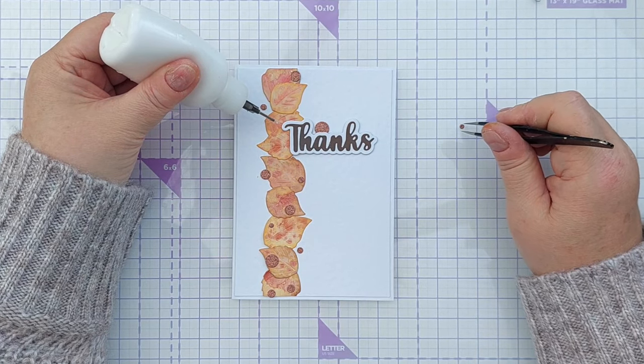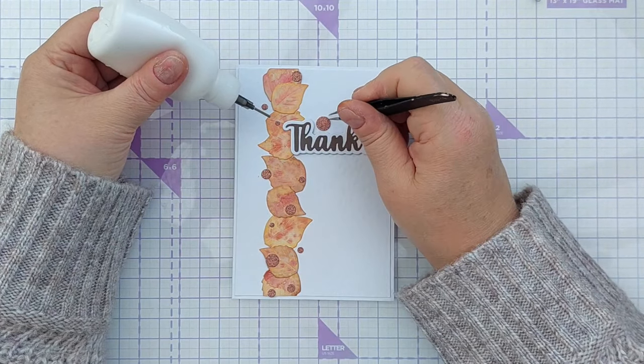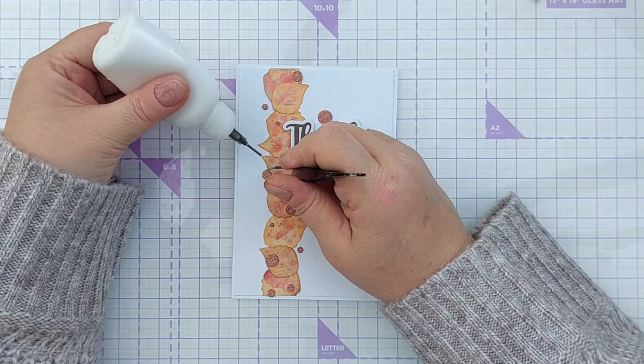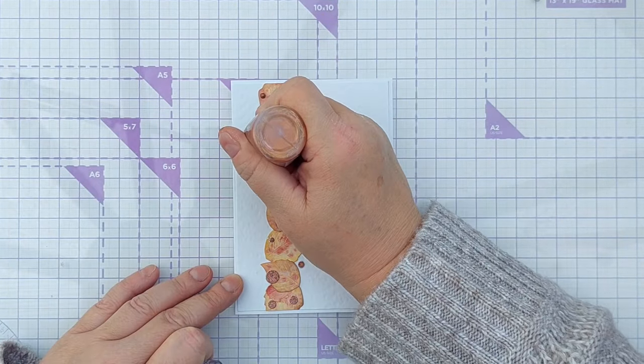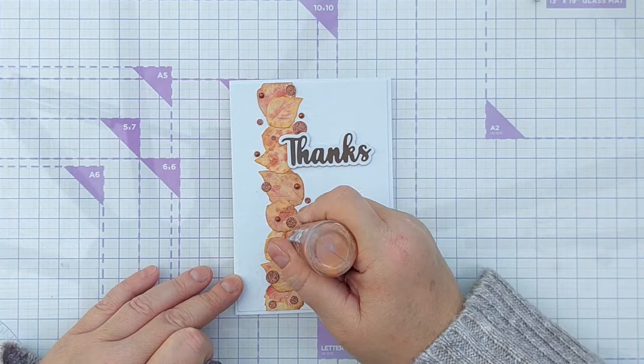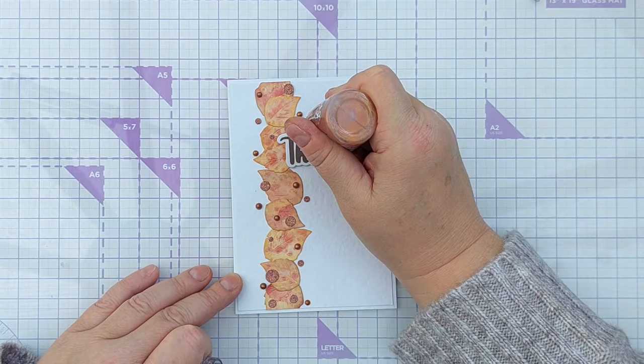I showed my card to my daughter at this point and she said it needed some more dimension and suggested Nuvo drops. So I got my copper penny Nuvo drops out and mingled those amongst the circles. So there's two types of copper circles: glitter cardstock circles and copper penny Nuvo drop circles.